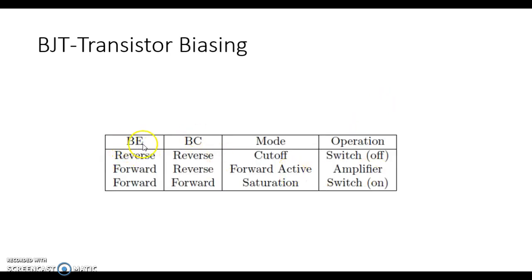In order for the transistor to act like a switch in the off position — also called cutoff — we have the base-to-emitter junction reverse biased and the base-to-collector junction reverse biased as well. When that occurs, the transistor acts like an open switch. When we have both the base-to-emitter junction and the base-to-collector junction forward biased, the switch acts like it's on, meaning it's a closed switch and it allows current to flow through it.